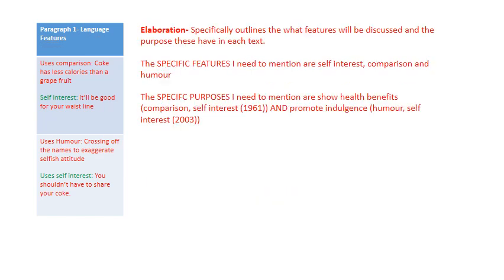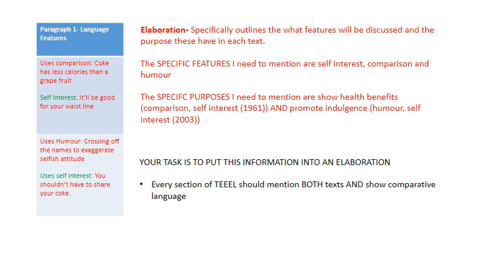Now we go to the elaboration, which is really the section that most people have difficulty with, but it's really about clarifying. I said there were language features — now I need to say what those features are. The specific features I need to mention are self-interest, comparison, and humour. The specific purposes I need to mention are to show the health benefits. The self-interest was related to health benefits, the fact that it was good for your waistline, and for the 2003 text it was more about guilty self-indulgence — to promote indulgence through humour and self-interest. You can pause it if you like, but here comes mine.